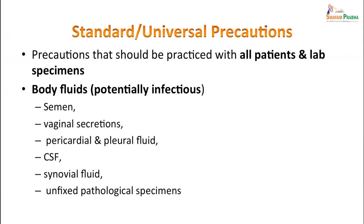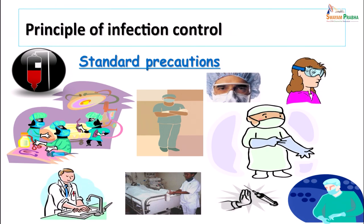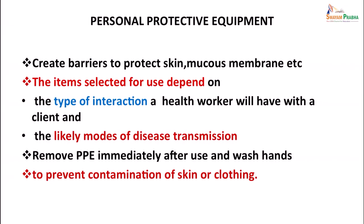Another important aspect of waste management is standard or universal precautions, to be taken by all patients and labs for all specimens. Body fluids that can be potentially infectious include semen, vaginal secretions, pericardial and pleural fluid, CSF, synovial fluid, and other unfixed pathological specimens. Standard precautions include protecting yourself with a mask, gown, goggles where splashes can occur, and preventing sharps injuries. Personal protective equipment creates a barrier to protect skin and mucous membranes. The item selected depends on the type of interaction, the procedure being done, and the diseases that can be transmitted.